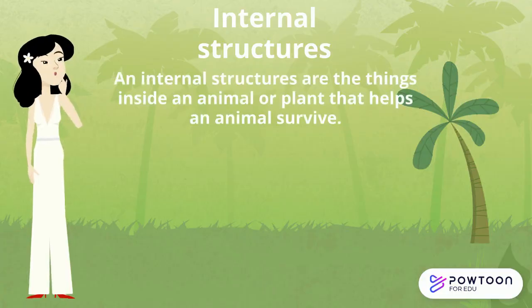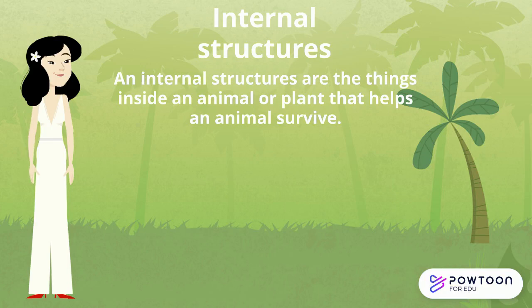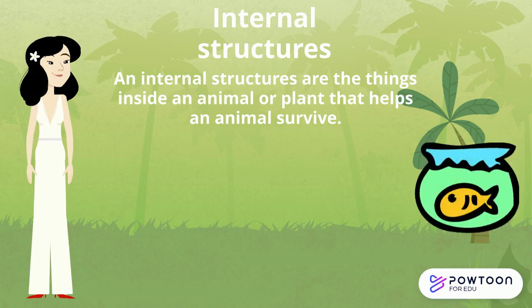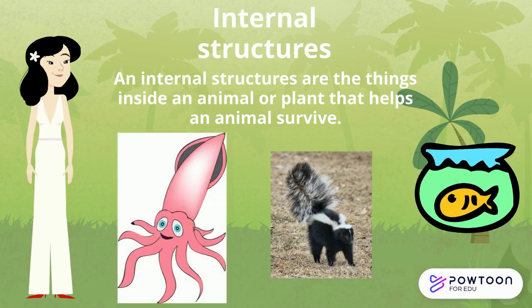What is an internal structure? Internal structures are the things inside an animal or plant to help them survive. Some examples for animals would be that fish use gills to help them breathe underwater. Skunks have glands to scare away prey, and squids have ink to blind prey.